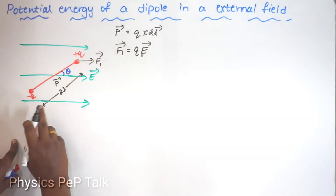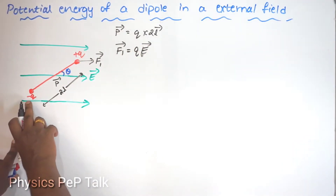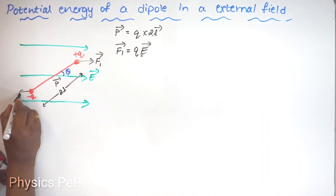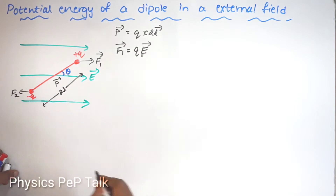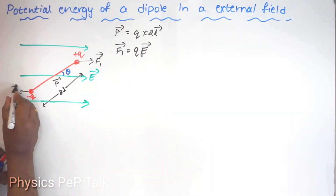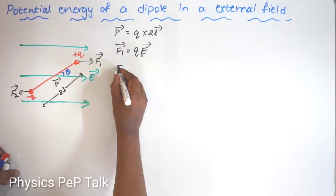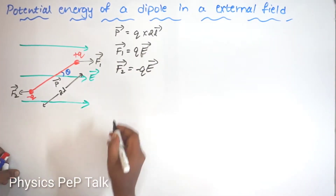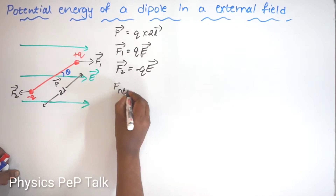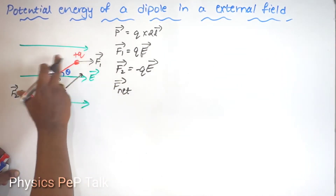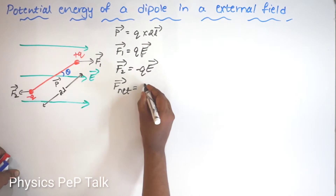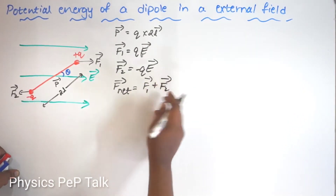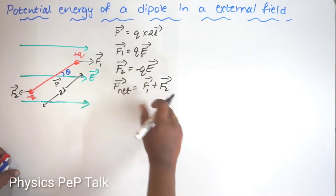Similarly, for a negative charge, it will experience a force in the direction opposite to that of the electric field. F2 will be in this direction, so F2 = −Q × E. The net force acting on the dipole will be F1 + F2, so QE + (−QE) = 0.